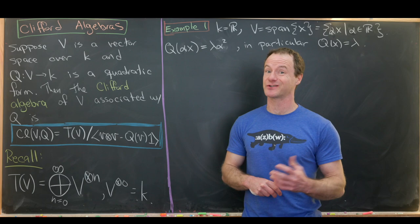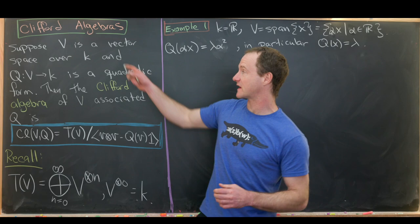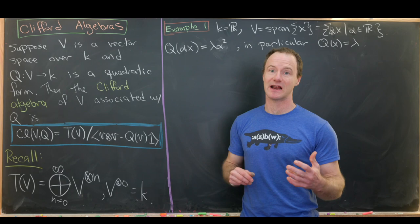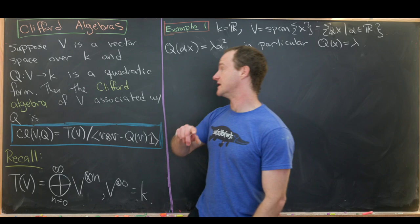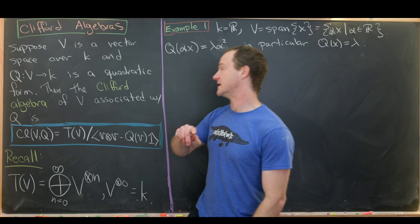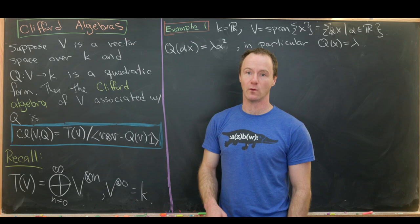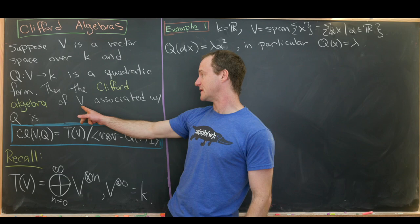So let's suppose that V is a vector space over an arbitrary field K. Later we'll say that this field K cannot have characteristic 2, but right now we're leaving it as arbitrary. In most of our examples we'll use K to be the real numbers. Our next piece of the building block is Q, which is a map from V to K, and it's a quadratic form. Right now I'll just say it's a quadratic form. Then the Clifford algebra of the vector space V associated with the quadratic form Q is defined as follows.